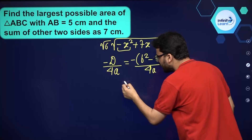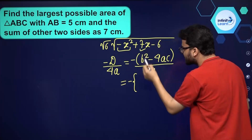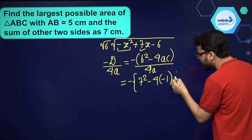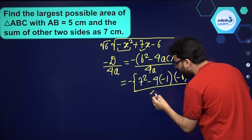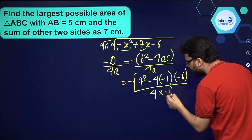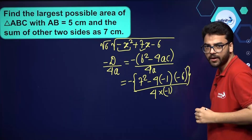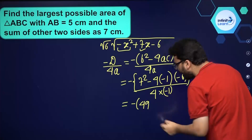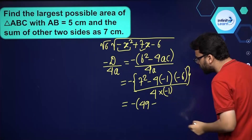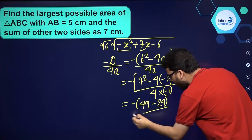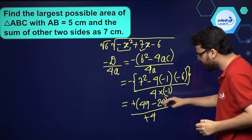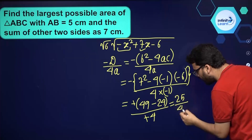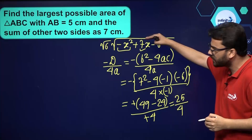Substituting the values: b is 7, so b² is 49; a is the coefficient of x² which is −1, and c is −6. So we get minus of (49 minus 4 times (−1) times (−6)), divided by 4 times (−1). This gives minus of (49 minus 24) over minus 4, which simplifies to 25 divided by 4.